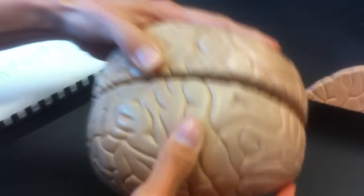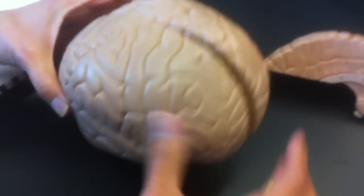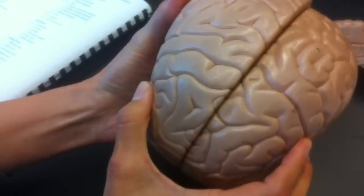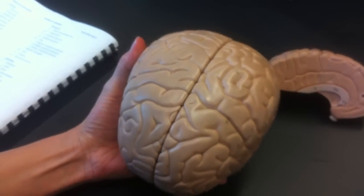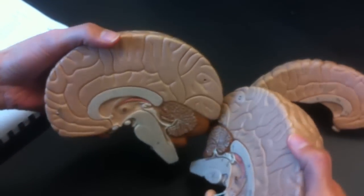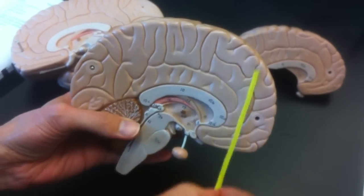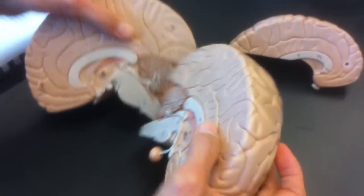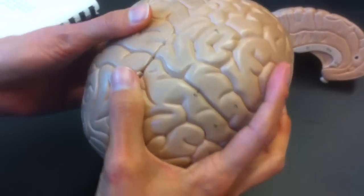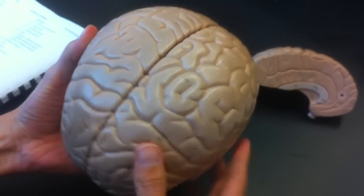Cerebrum, which is the telencephalon. Cerebrum is the top part, and the cerebral hemispheres. Cerebral cortex is the gray matter. It's on the outside of this model. Longitudinal fissure. Transverse fissure.